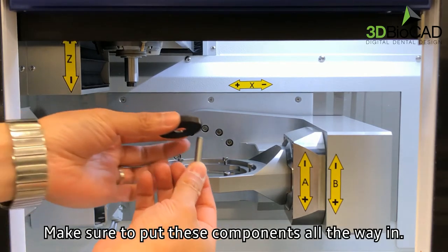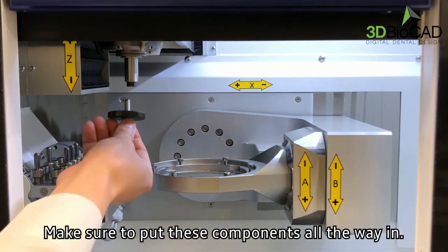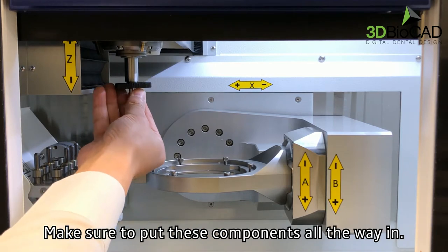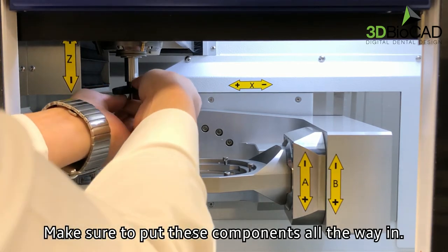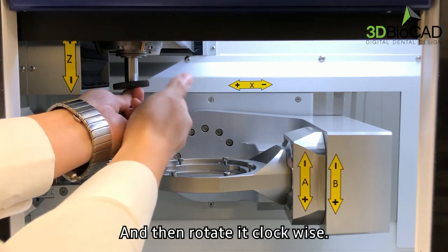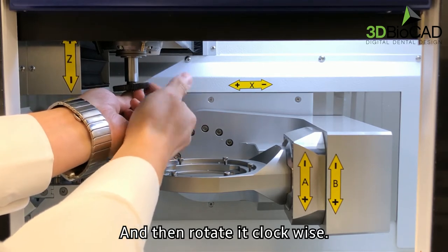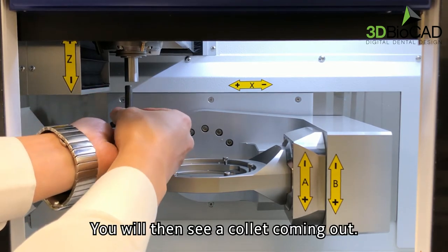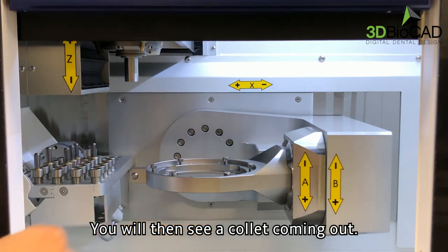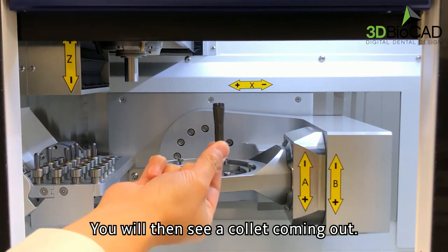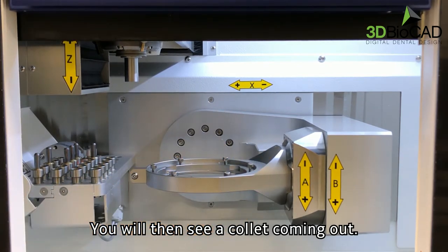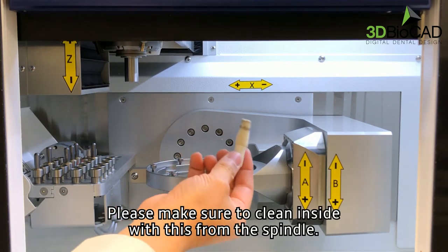Make sure to put these components all the way in, and then rotate it clockwise. You will then see a collet coming out.